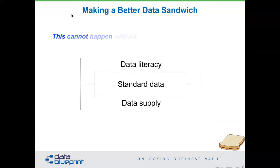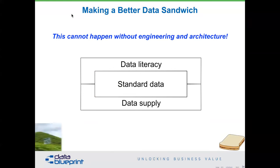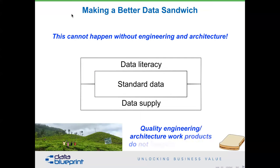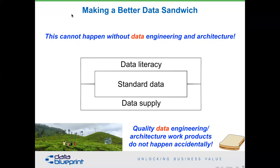This process cannot happen without engineering and architecture. I was on a tea farm in India a couple of years ago and saw a wonderful Deming quote over the cash register: 'Quality engineering and architecture work — products do not happen accidentally.' What we're talking about is data: making sure that if these high-volume transactions are incorrect in any way, shape, or form, they're going to replicate and multiply, giving us a poor quality foundation.